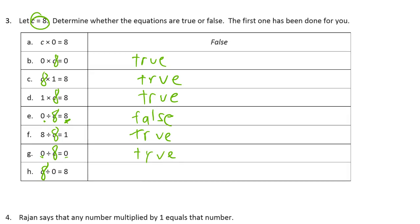And 8 divided by 0 equals 8. Here's the thing. You can't divide by 0. You just can't. False.